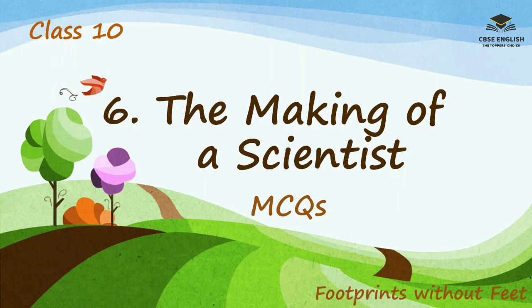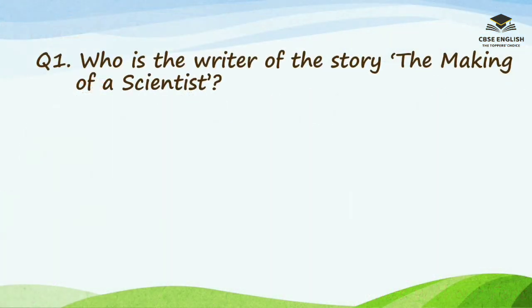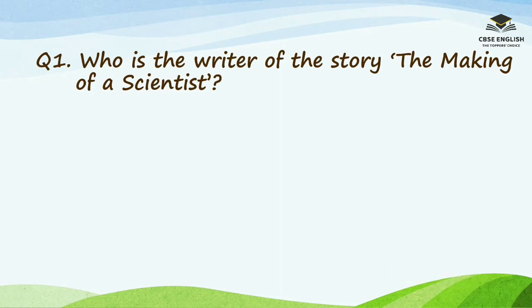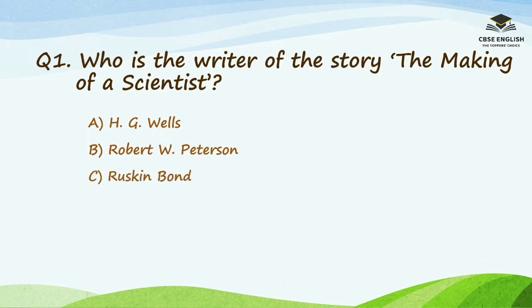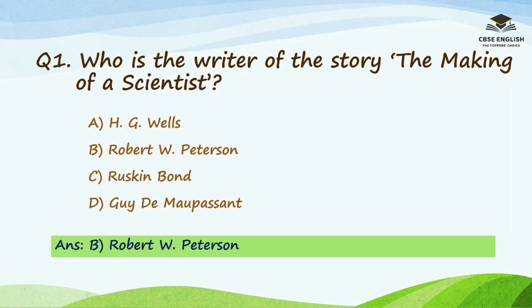Hello friends, welcome to our channel CBSC English, the topper's choice. In this video we are going to discuss multiple choice questions of Class 10th, 6th story from the supplementary reader book 'Footprints Without Feet' — 'The Making of a Scientist.' Question number one: who is the writer of the story 'The Making of a Scientist'? Options are H.G. Wells, Robert W. Peterson, Ruskin Bond, or Guy de Maupassant. The right option is Robert W. Peterson.